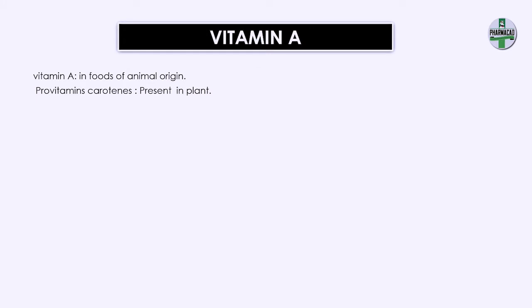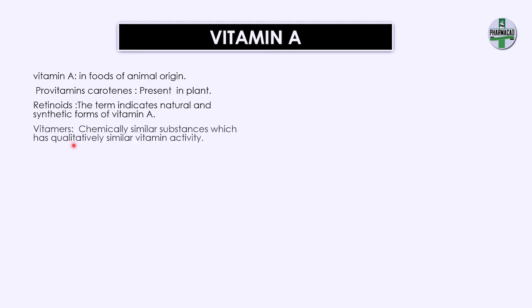Food from animal sources usually contains vitamin A, while in plants the provitamins — i.e., carotenes — are obtained. Provitamins are substances which get converted into vitamins in the body. The term retinoids indicates the natural and synthetic forms of vitamin A. The vitamers of vitamin A — substances chemically similar to vitamin A with similar activity — include retinol, retinal, and retinoic acid.